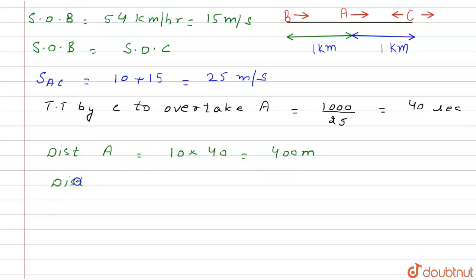So the total distance B must cover is 1000 + 400 = 1400 meters to overtake A before C does in 40 seconds.